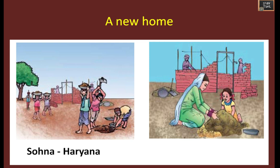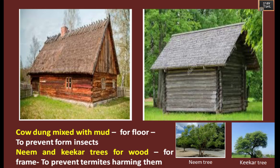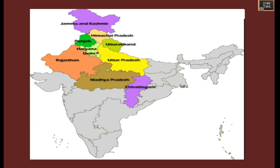His father made a frame with wood, using neem and kika trees, so that termites would not harm the wood. You can see pictures of neem and kika trees - these two trees prevent termites. They built this type of house with the available materials they had, moving from Pakistan to Haryana.